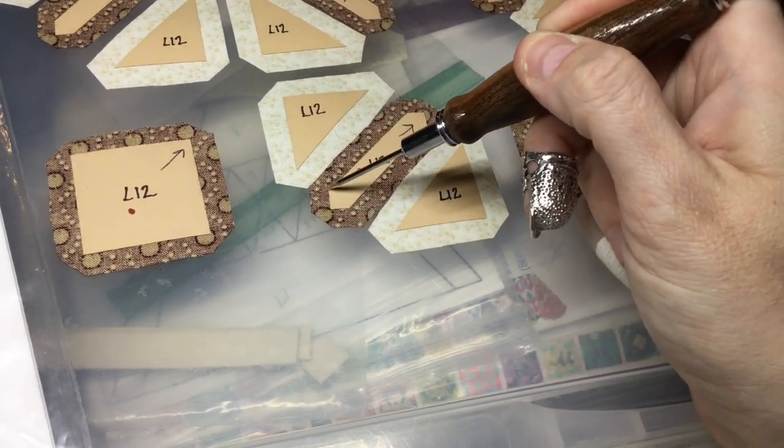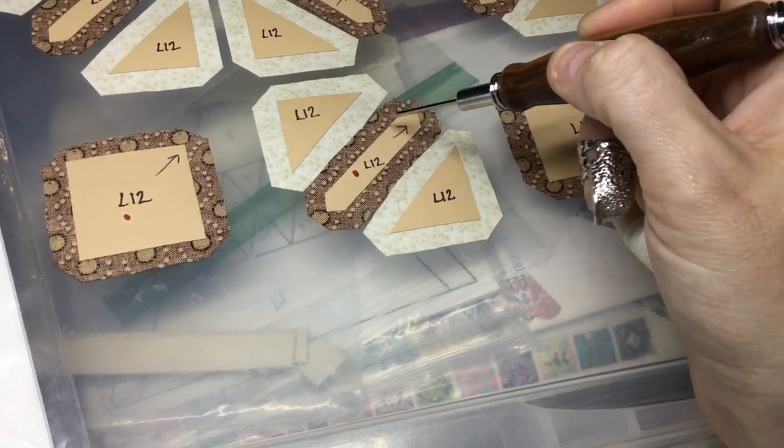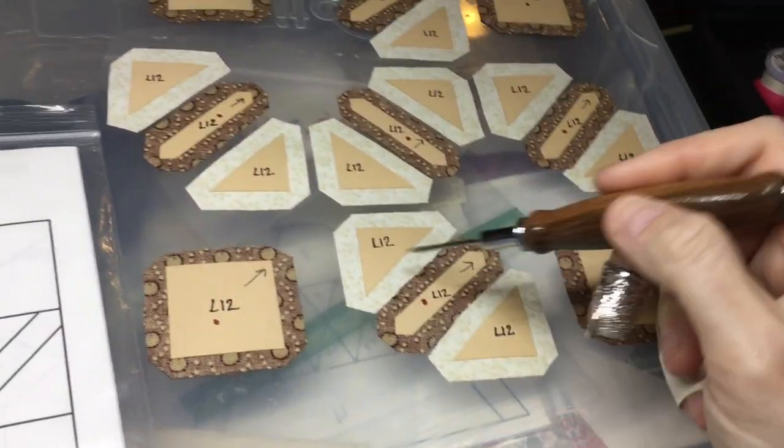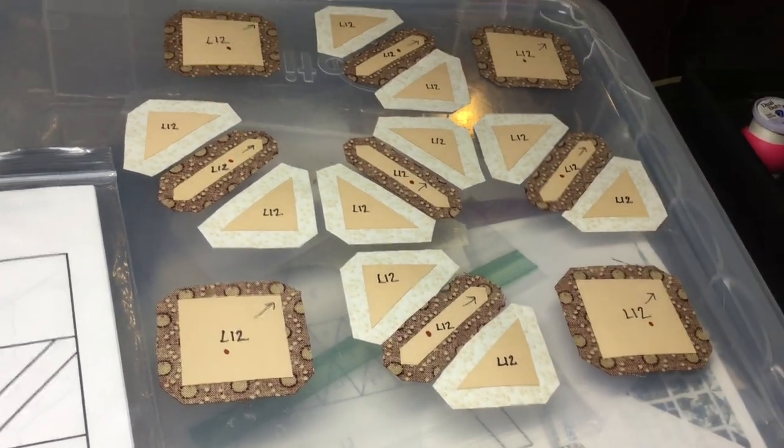This one I'm going to deal with the point. I'm going to base the points first—it gives you a more accurate point—and then I'm going to do the long sides after I do both points. So I'm going to assemble these units one at a time and then assemble them into rows.